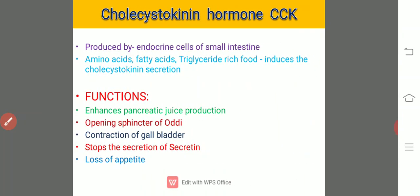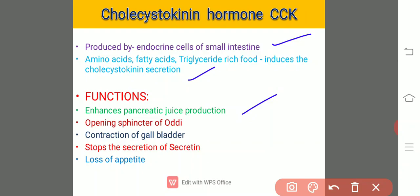The next hormone is cholecystokinin, CCK. It is produced by endocrine cells of the small intestine. Food enriched with amino acids, fatty acids, and triglycerides induces the secretion of cholecystokinin. Its functions are: it enhances pancreatic juice production, helps in the opening of the sphincter of Oddi — the sphincter between the small intestine and the bile duct — causes contraction of the gallbladder, stops the secretion of secretin, and causes loss of appetite.